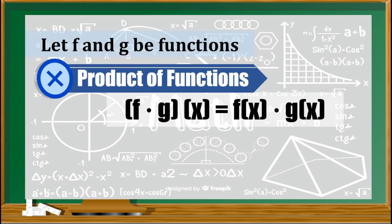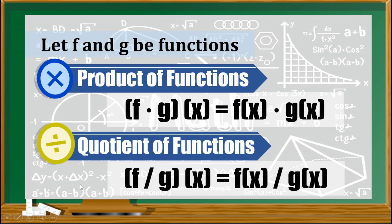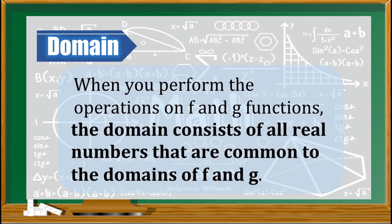Third, we have the product of functions. When you say product, you are asked to multiply the two functions, so f times g of x is equal to f of x times g of x. And the last operation, we have the quotient of functions: f over g of x is equivalent to f of x over g of x. When you perform operations on f and g, the domain consists of all real numbers common to the domains of f and g, so you need to look first at the domain of each function, then look at their common elements.